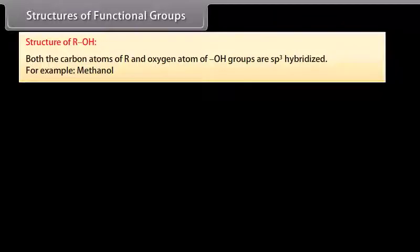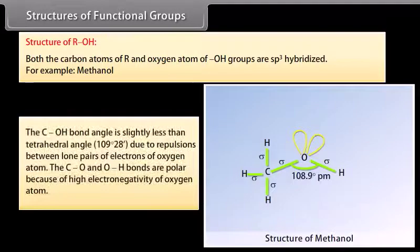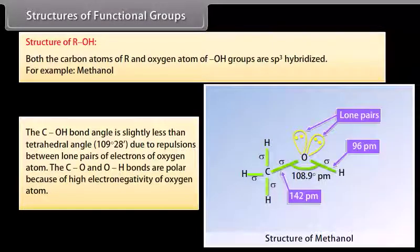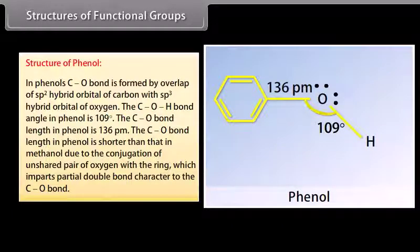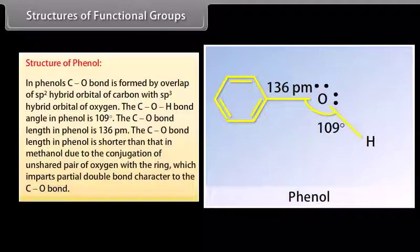Structure of ROH: both the carbon atoms of the alkyl group and the oxygen atom of the hydroxyl group are sp3 hybridized. For example, in methanol, the C-O-H bond angle is slightly less than the tetrahedral angle of 109°28' due to repulsions between lone pairs of electrons on the oxygen atom. The C-O and O-H bonds are polar because of the high electronegativity of oxygen. In phenols, the C-O bond is formed by overlap of an sp2 hybrid orbital of carbon with an sp3 hybrid orbital of oxygen, with a C-O-H bond angle of 109°.